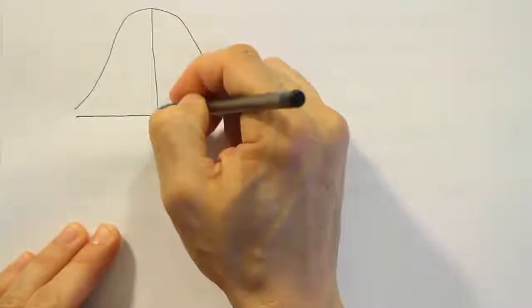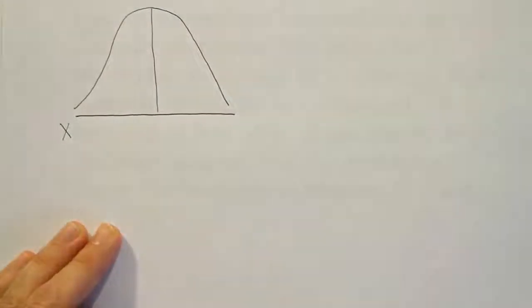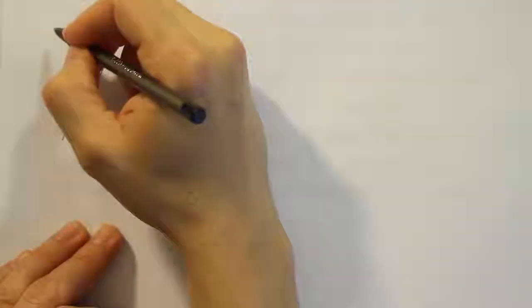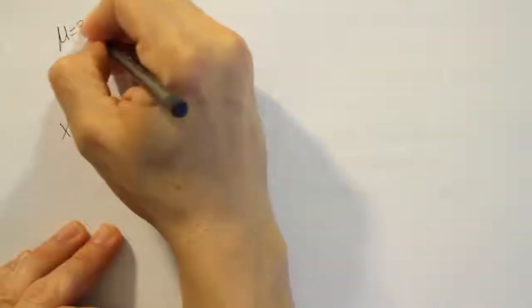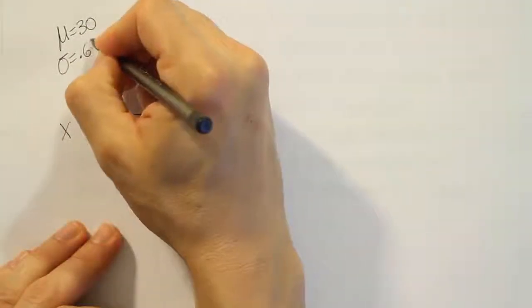On that bell curve you should label an x-axis, which is going to represent fuel economy in this case. The problem tells us that the average fuel economy is 30 miles per gallon, so you should label that somewhere on your drawing. Also, it says the standard deviation for that is 0.67.